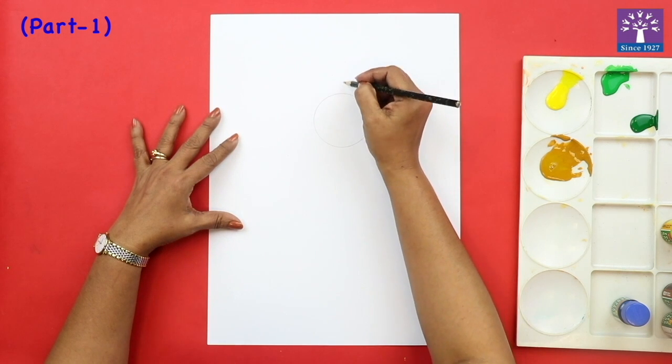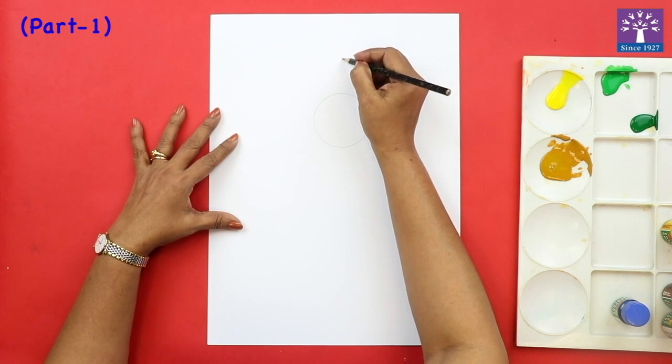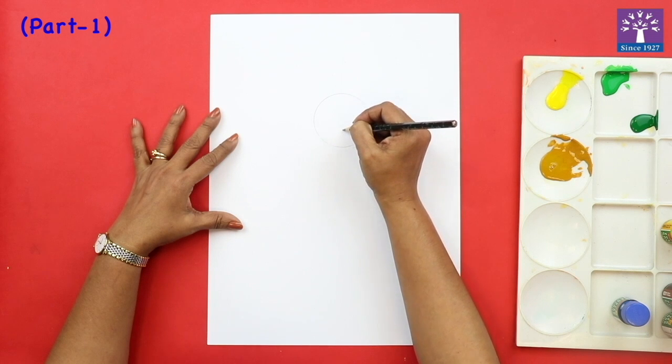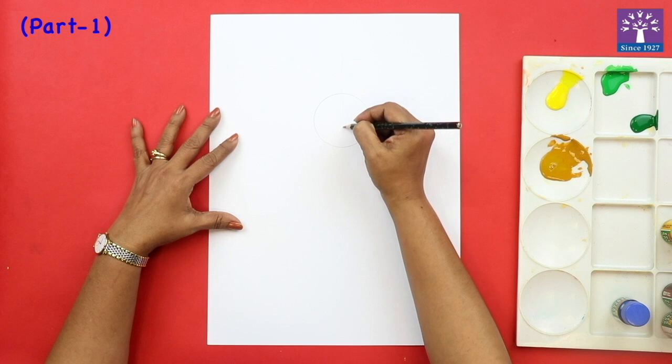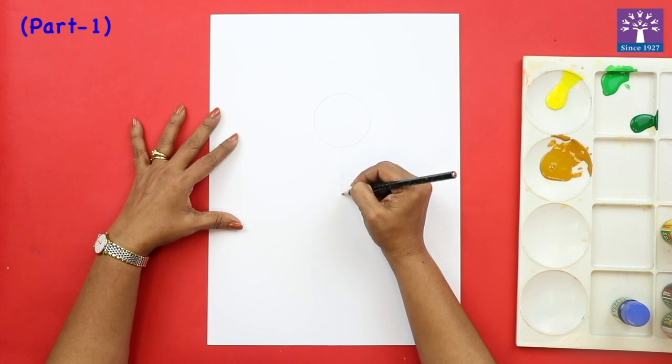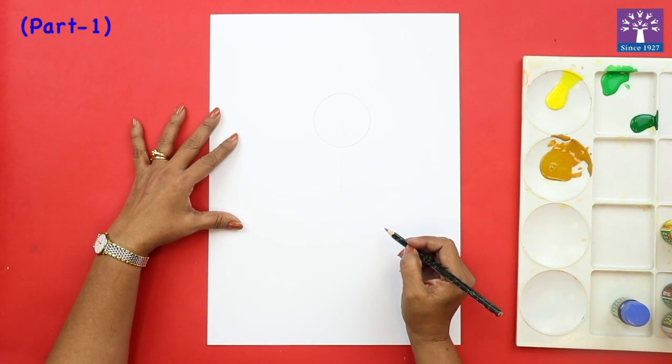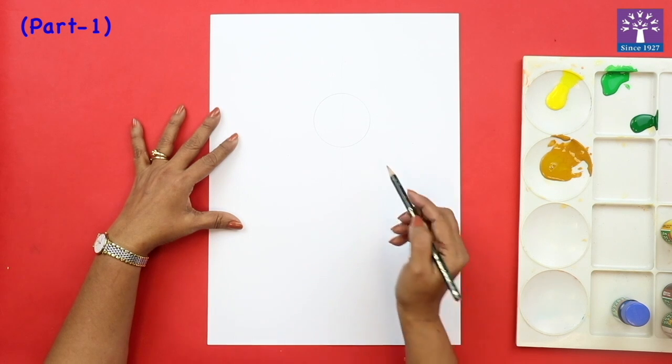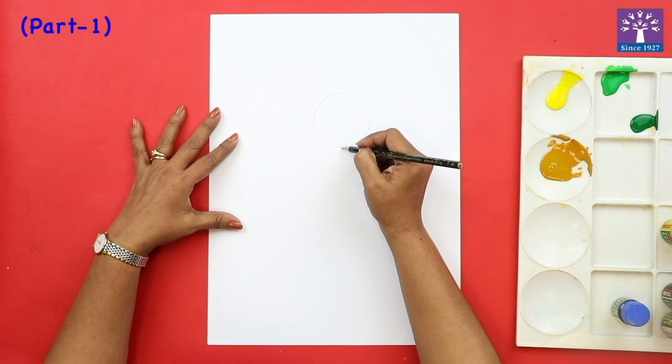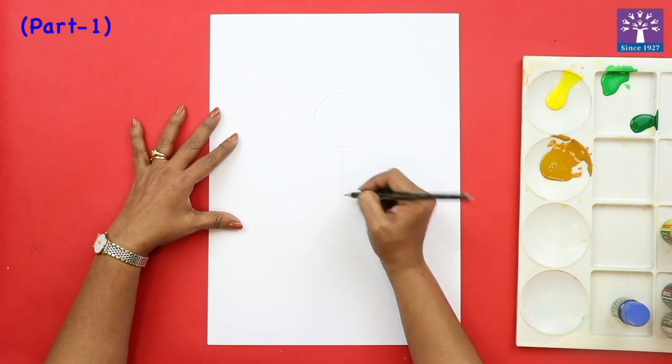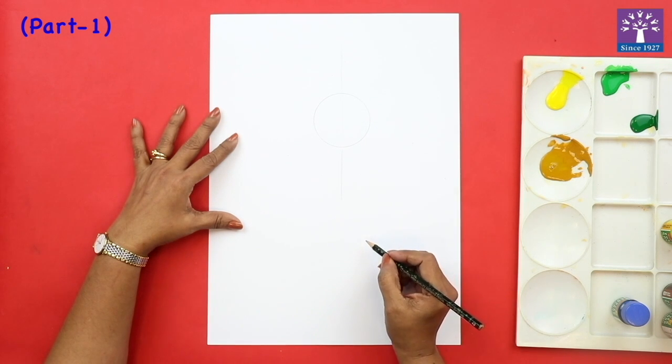Then draw a plus sign or a straight line across the circle. Draw this lightly. These are going to be the guidelines to draw the petals of the sunflowers.